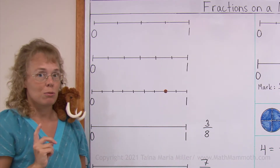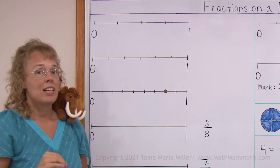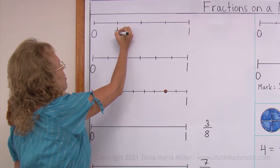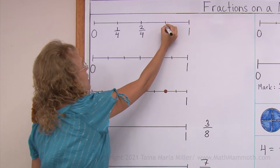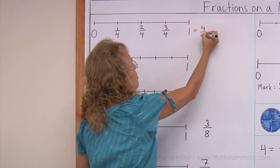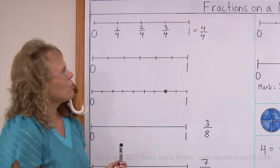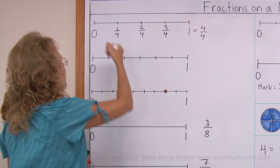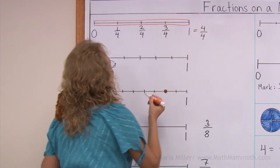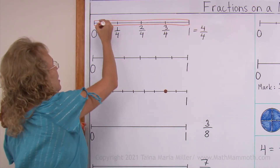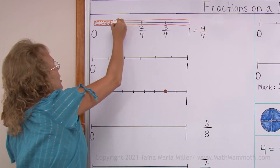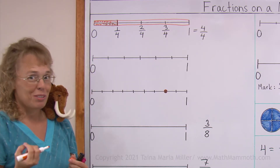And therefore, we can mark the fractions one fourth, two fourths, and three fourths on that number line. This tick mark is one fourth, the next one is two fourths, and this one is three fourths. This one is the same as four fourths or one whole. If you don't see it, think of it as a rectangle — a long skinny rectangle divided into four parts. If you color one part, you reach up to one fourth, the tick mark for one fourth.